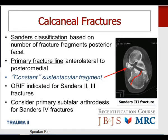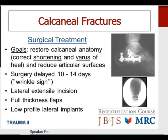Goals of surgical treatment for calcaneal fractures are to restore anatomy, correct shortening and varus malalignment of the tuberosity, and reduce the posterior facet. Surgery is typically delayed 10 to 14 days until the soft tissue condition allows — look for the wrinkle sign. The most common surgical technique is the lateral extensile incision with full-thickness flaps and low-profile lateral implants. More recently, less invasive techniques such as the limited sinus tarsi incision with percutaneous fixation and arthroscopic-assisted reduction have shown lower soft tissue complication rates with equivalent outcomes. Complications are significantly increased in diabetics and smokers; other poor outcome factors include older age, male sex, obesity, manual laborers, and workers' compensation injuries.